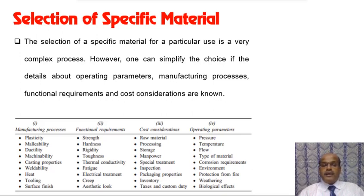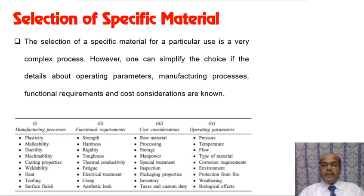The selection table covers different properties: manufacturing process properties such as plasticity, malleability, ductility, machinability, casting, weldability, heat tooling, and surface finish; functional requirements like strength, hardness, rigidity, toughness, thermal conductivity, fatigue, and electrical properties; and cost considerations including raw material, processing, storage, manpower, heat treatment, inspection, packaging, taxes, and customs duties.